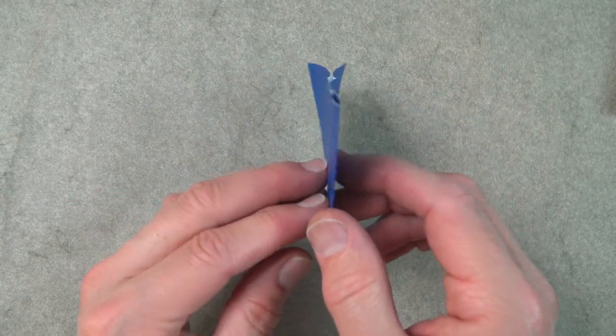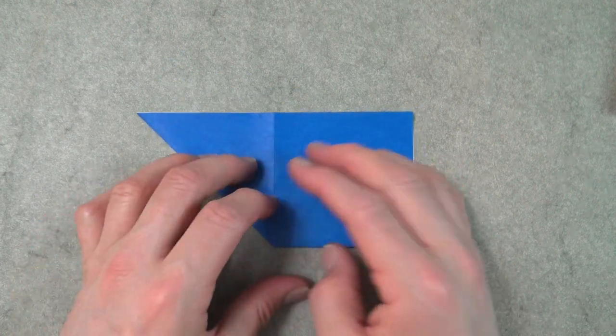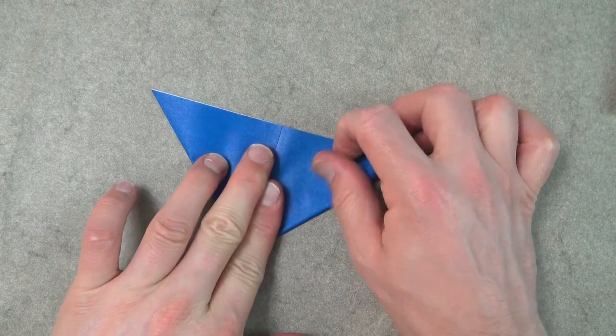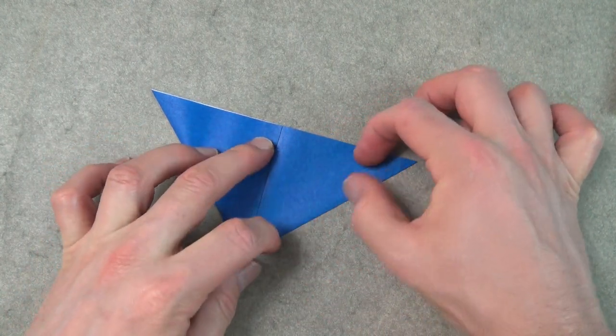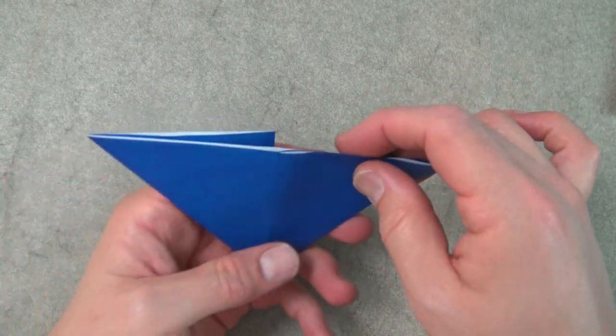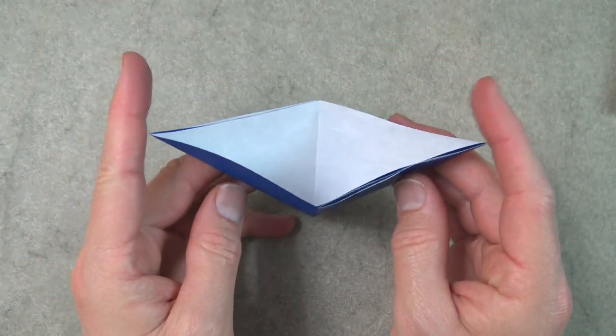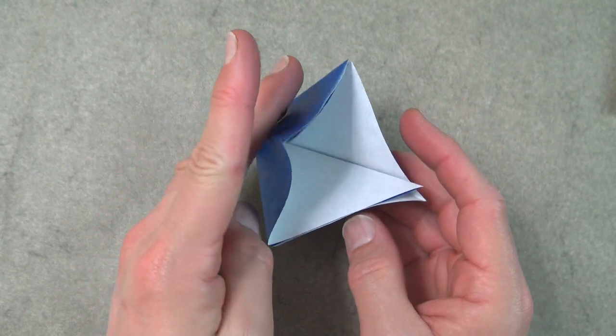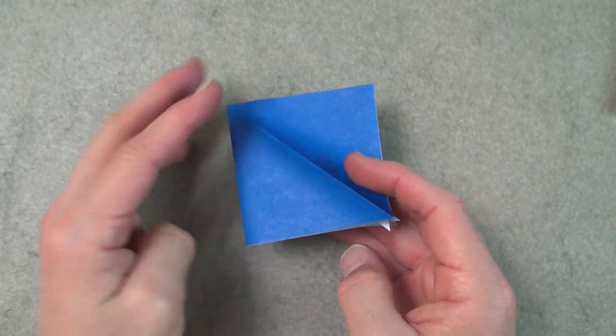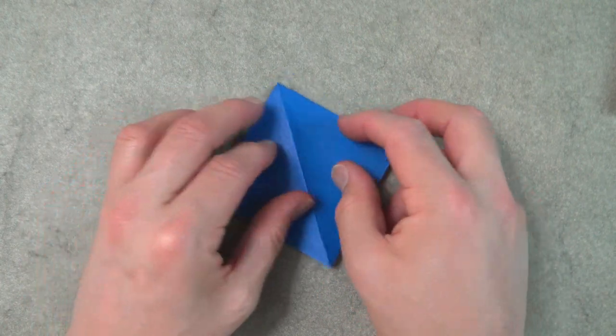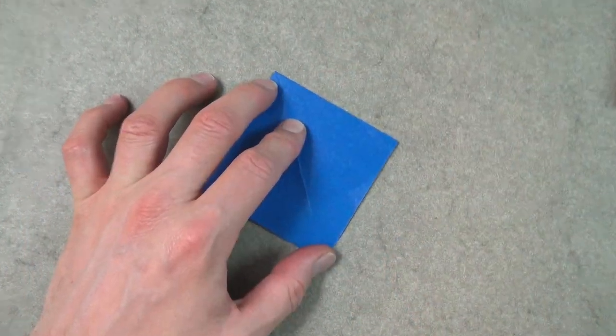Turn over and repeat. Now open the big pocket, put your finger inside and push these two points together and flatten. And here we have the square base.